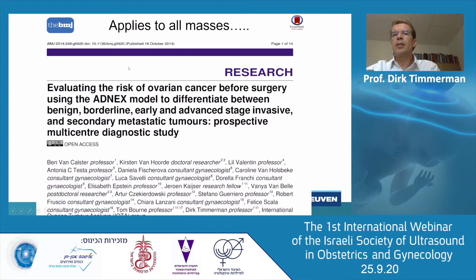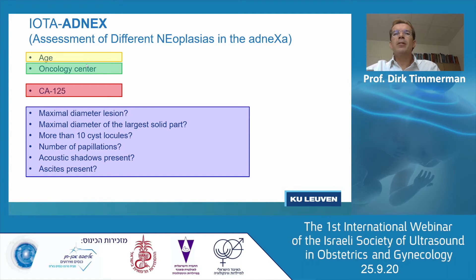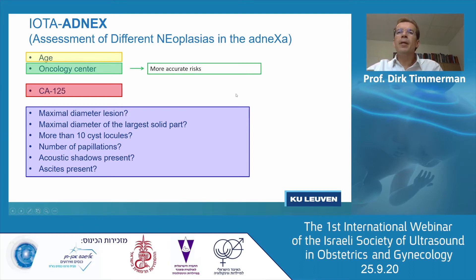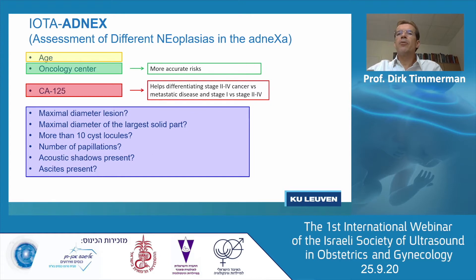The ADNEX model was published in 2014, based on 6,000 tumors — 2,000 malignancies and 4,000 benign tumors. The variables are: age of the patient, whether you work in an oncology center — very important because your case mix will differ from a regional or private hospital — and CA-125, which helps differentiate between stage 2-4 cancer versus metastatic disease. In metastatic disease it will be lower. Almost 50% of stage 1 disease has normal CA-125 levels. It's not fully helpful to distinguish benign from malignant, but helpful to distinguish between subgroups. Then there are six ultrasound variables.